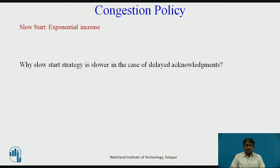Slow start cannot continue indefinitely; there must be a threshold to stop this phase. The sender keeps track of a variable named slow start threshold, i.e., SSThresh. When the size of the congestion window in bytes reaches this threshold, slow start stops and the next phase begins.